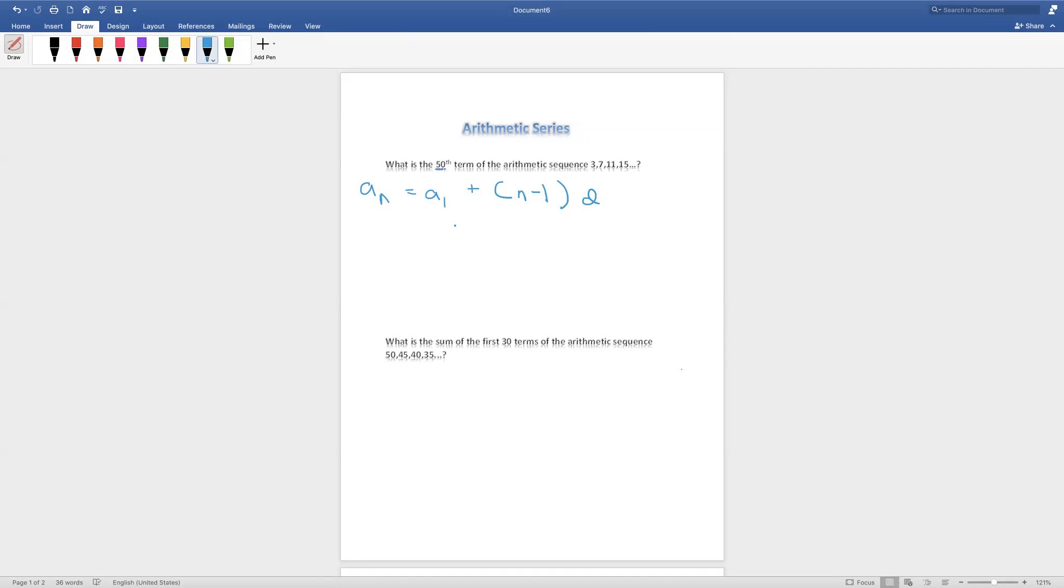Now, we're going to fill in the variables. So, 3 plus 50 minus 1 times 4. You're probably wondering, why did I take 4? It's because the difference between 7 and 3 is 4, 11 and 7 is 4, 15 and 11 is 4. This pattern goes on till the 50th term. Now, let's solve.